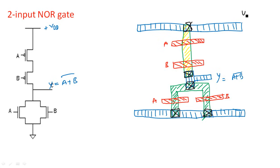Contact cuts are placed at the connections. Here it is VDD, and here it is VSS. These are the two different layout diagrams used for the implementation of any type of logic realizations. That is why these are known as universal gates — NAND and NOR gates, two-input. Thank you.